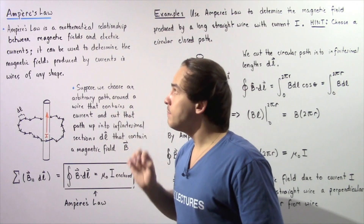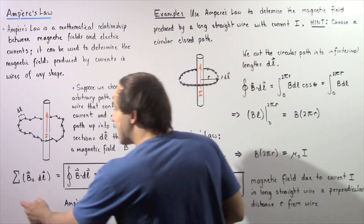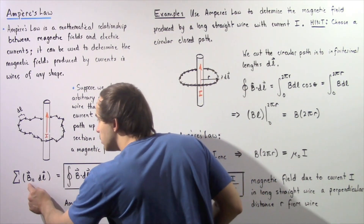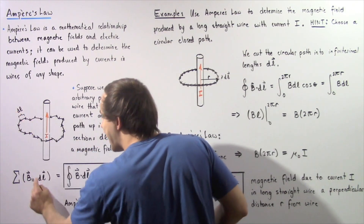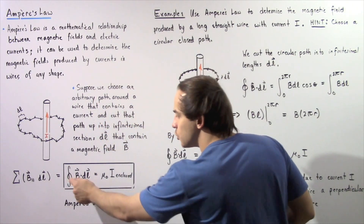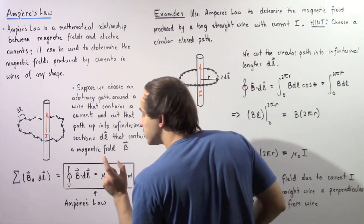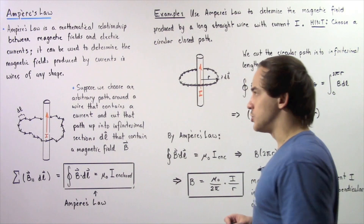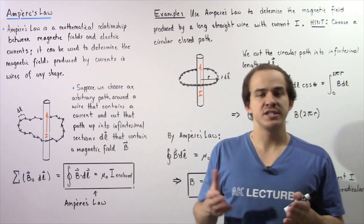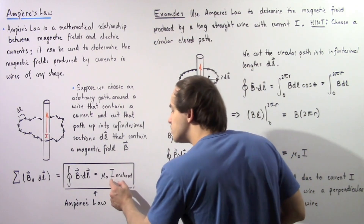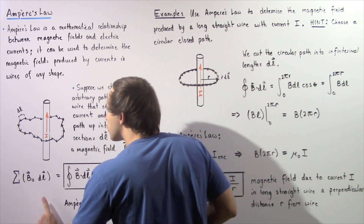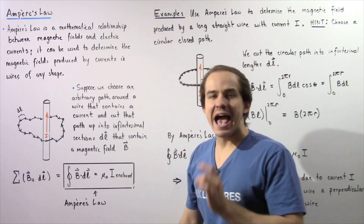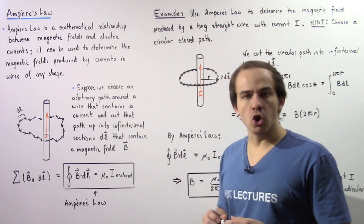Now let's examine what Ampere's law tells us. It essentially tells us that the sum of the product of the component of the magnetic field B that points parallel to our segment DL and DL — this sum, which is equal to the closed integral of the dot product of B and DL — is equal to mu naught, the permeability of free space, multiplied by the enclosed electric current that passes through the surface given by this closed pathway.